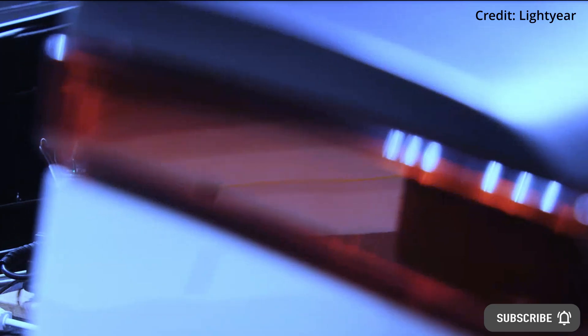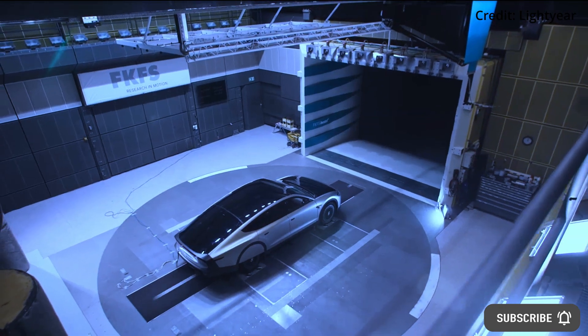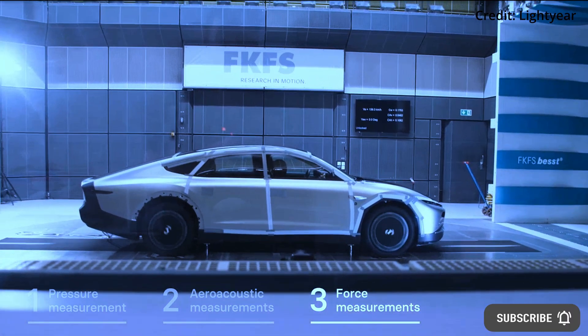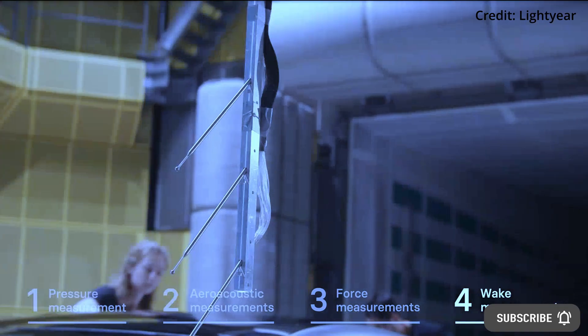Tests undertaken by Lightyear estimate that the solar cells can add up to 70 kilometers or 44 miles per day to the car's 388-mile range from traditional charging.